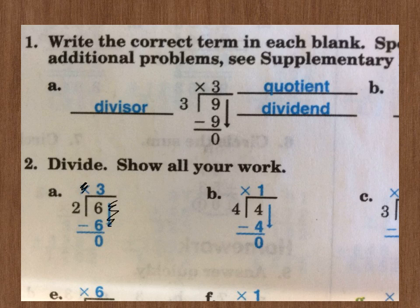So, B, four goes into four one time, so they've got a one on top. Four times one is four. So, that's what we're subtracting, four minus four, and that equals zero. Our answer's not zero, but the quotient is the number on top, the one.